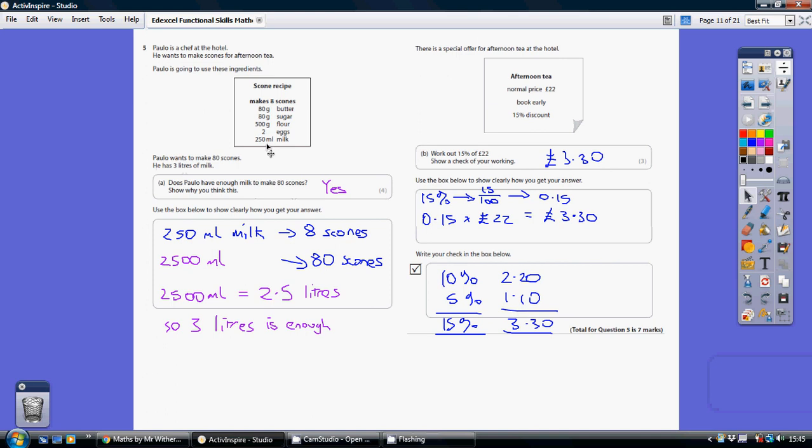We're told that 250 milliliters of milk make 8 scones. So, if we times that by 10, both of these by 10, that's telling us that 2,500 milliliters would make 80 scones. And there are 1,000 milliliters in a litre.